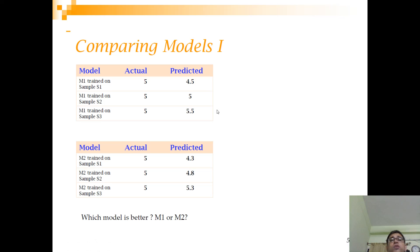So most of you intuitively will tell me that sir model M1 is better and the reason is that the average value of the predictions is closer to the actual value. So in this case the average of 4.5 and 5.5 is 5 and the second case the average of 4.3, 4.8 and 5.3 is 4.8. So from that perspective you will say that model 1 is better. Now let's look from another perspective.